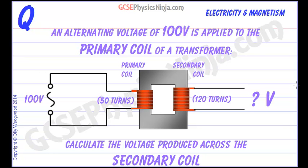An alternating voltage or AC supply of 100V is applied to the primary coil of a transformer. The primary coil is the input coil and we can see that we've got 50 turns on that, and on the secondary coil, the output of the transformer, we have 120 turns.